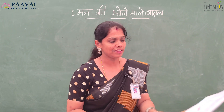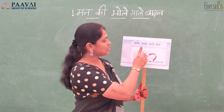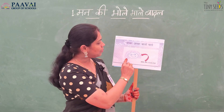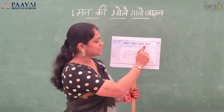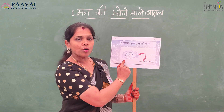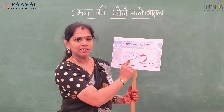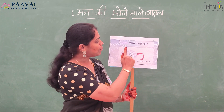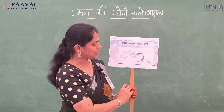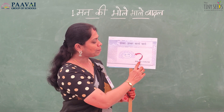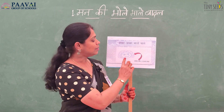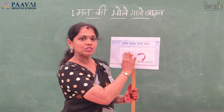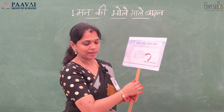The first line is Jhabbar jhabbar balo wale. The poet is just comparing the clouds to the children who are having curly hair. Jhabbar jhabbar balo wale means jhabbar bal — curly hair. The poet is just comparing the clouds to the children having curly hair.